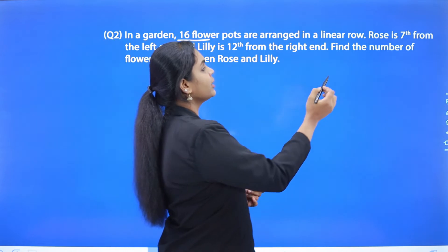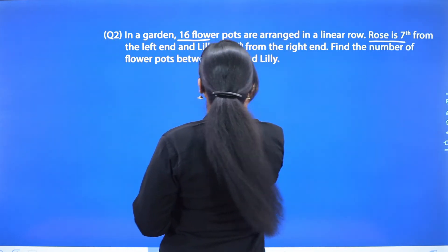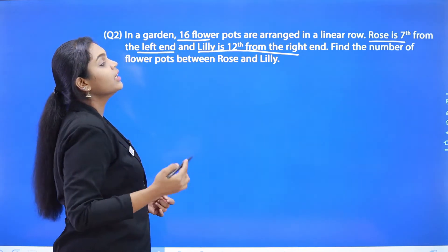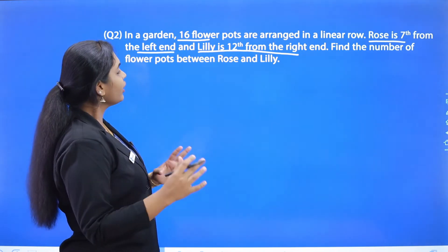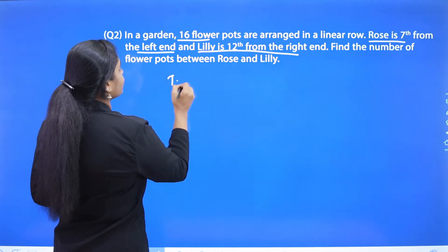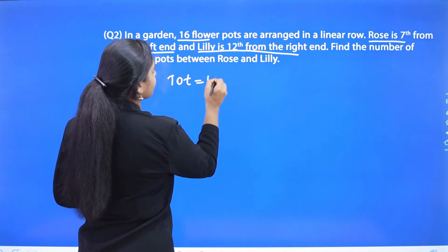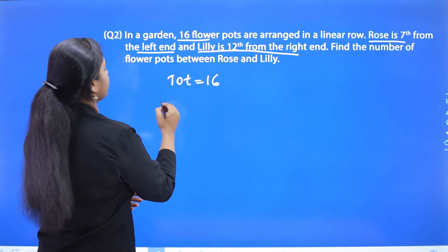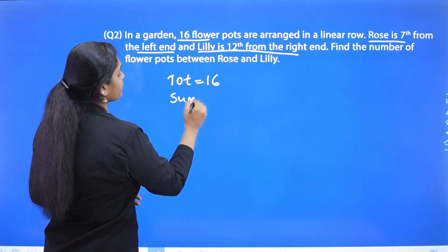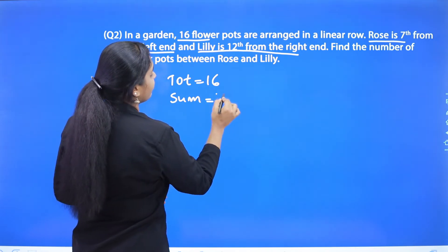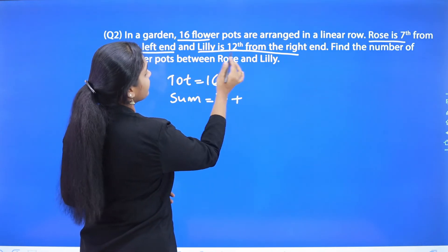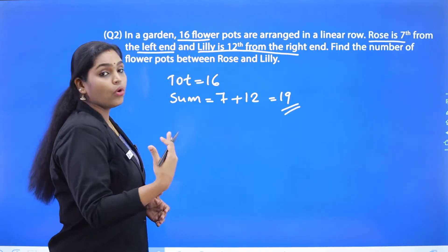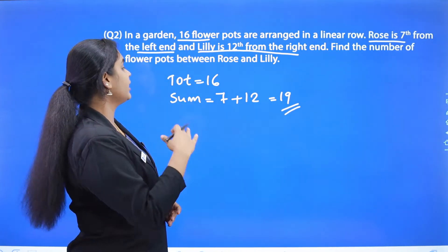What we have to do is take the total number, which is 16, and then take the sum of the given positions. The positions are 7th from the left and 12th from the right, so the sum is 7 plus 12.